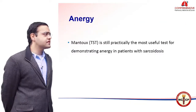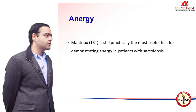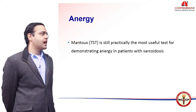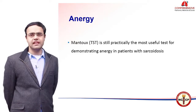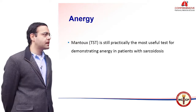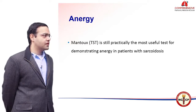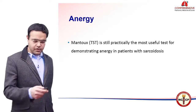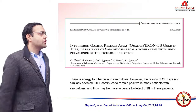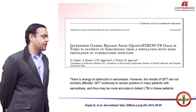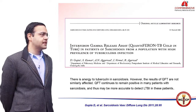Anergy is a systemic phenomenon noticed in sarcoidosis. For that, the tuberculin skin test — the Mantoux test — is still practically the most useful test for demonstrating it in patients with sarcoidosis. From our center, we also evaluated the interferon-gamma release assay — the QuantiFERON-TB Gold.